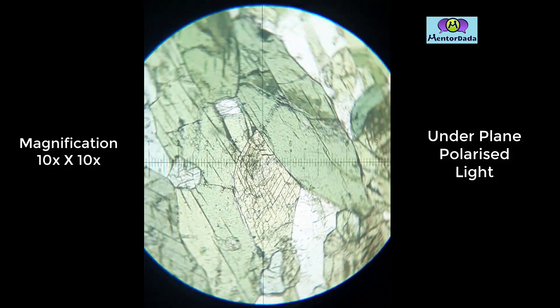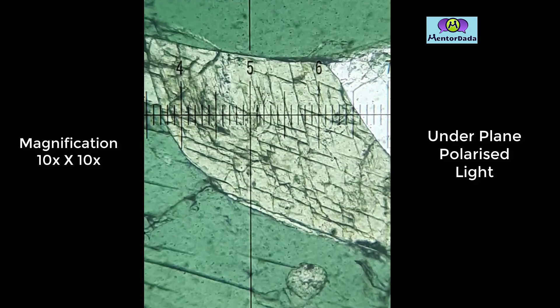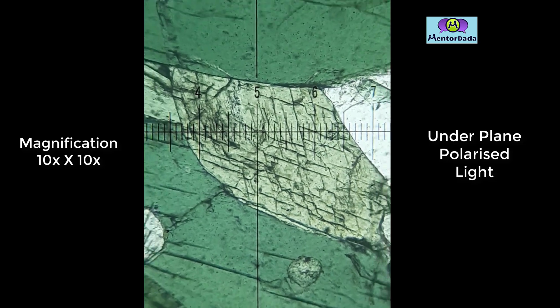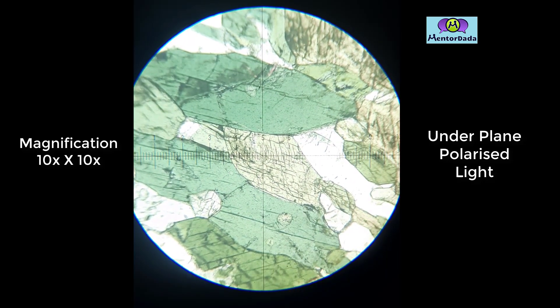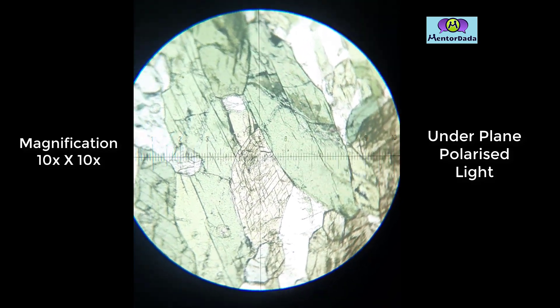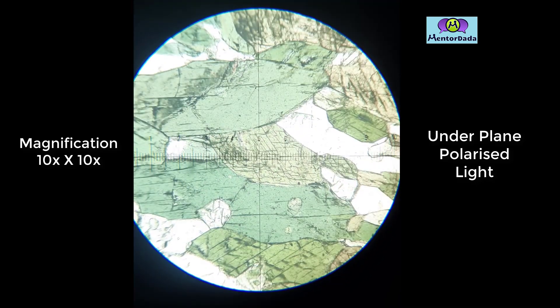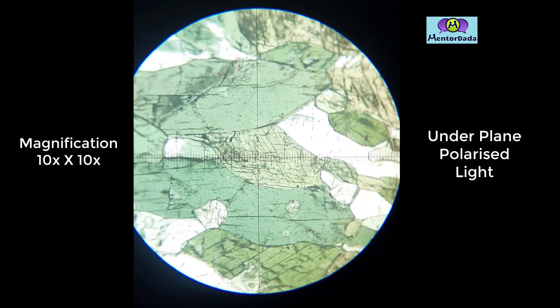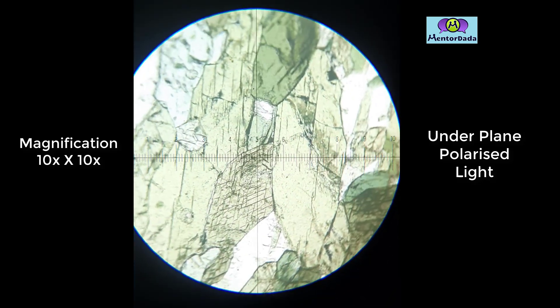This is another mineral at the center of the stage and we will identify this mineral which is exactly situated at the center. The mineral is showing color change, so this is a pleochroic mineral.